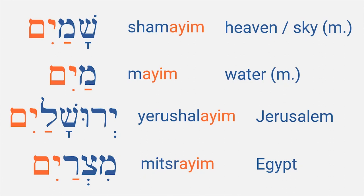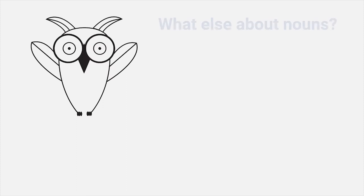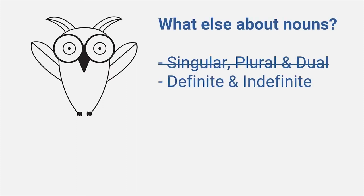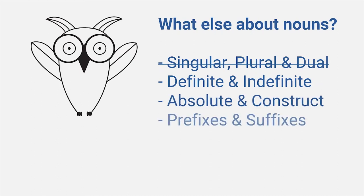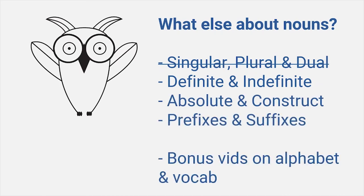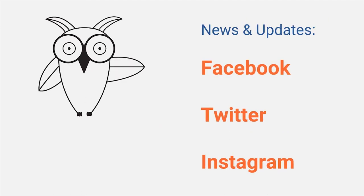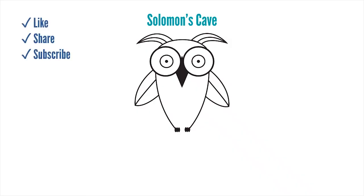So that was singular, plural, and dual — their forms and their functions. The next video in this series will be about definite and indefinite, and in the meantime I hope to put out a few bonus videos about pronunciation and vocabulary. If you liked the video, please like it and don't forget to subscribe to the channel. You can also follow me on social media and share this with someone who is starting their Hebrew studies.